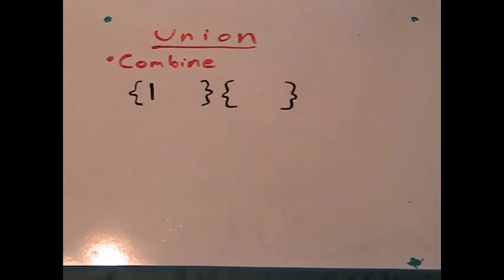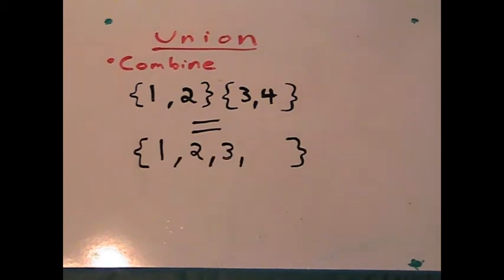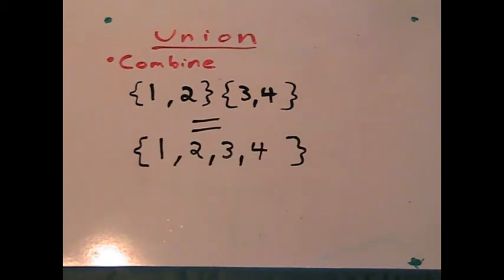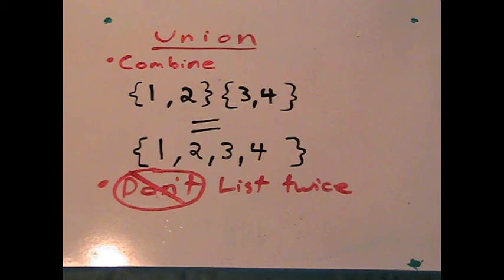Union is used to combine sets. For example, a set of 1 and 2, and a set of 3 and 4 combine to get a set of 1, 2, 3, and 4. But you do not list elements twice.